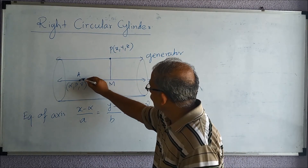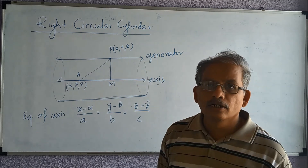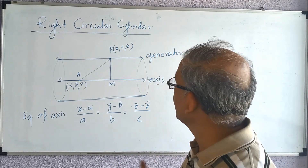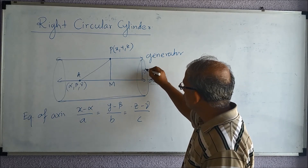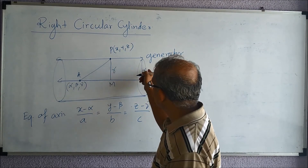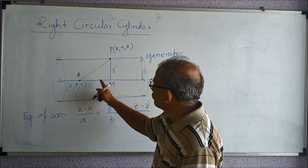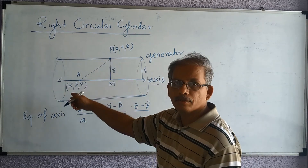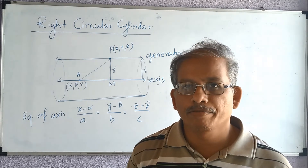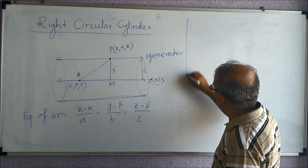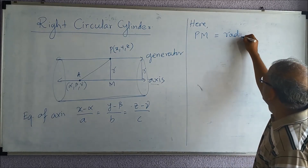This forms a right-angle triangle. The base of the cylinder is a circular base — that is why it is called a right circular cylinder. This circle has some radius, and since the generator and axis are parallel, PM equals the radius of the base circle. So PM equals r.